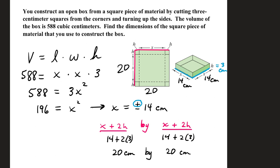Volume is length times width times height. We're going to cut out 3 by 3 squares from all four corners, fold it up, and we will get an open top box. We are told it's a square piece of material, so the base will be x by x. The height will be 3.